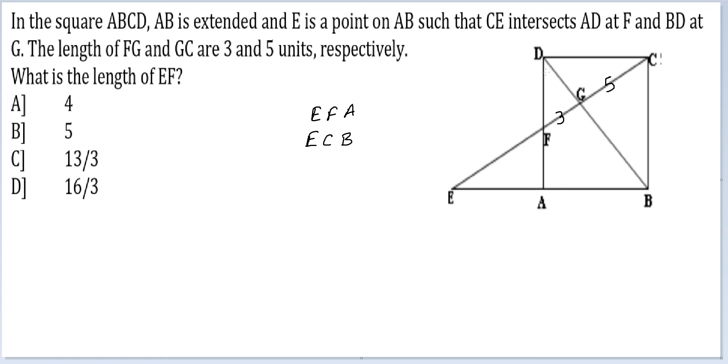Another thing that you can potentially see, this angle will be equal to this angle. This angle is of course equal to this angle, vertically opposite. So these two triangles, DGF and CGB are also similar.